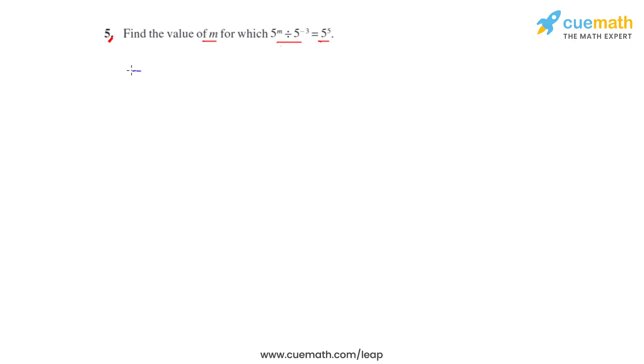So we can write it as 5 raised to m divided by 5 raised to negative 3 to be equal to 5 raised to 5.